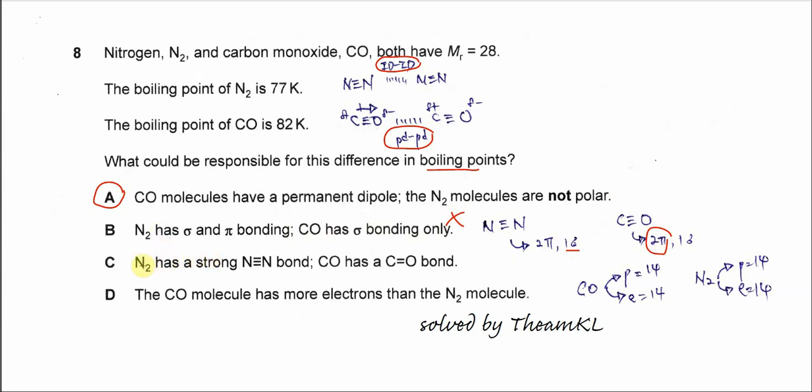For option C, nitrogen has a strong N≡N triple bond and CO has a C=O double bond. We're not really focusing on triple or double bonds here. When we discuss bond energy or bond strength, it's definitely not the answer because the boiling point is more about the intermolecular force, not the covalent bond between atoms. It's not about covalent bonds between atoms; it's about intermolecular forces.